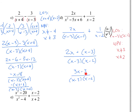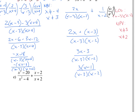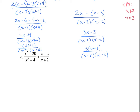Factor the numerator by a common factor of 3, giving 3 times x minus 1, over x minus 3 times x minus 2. Now x minus 1 is a factor of the numerator, but it does not match any denominator factor, so you cannot simplify further. This expression is completely simplified.